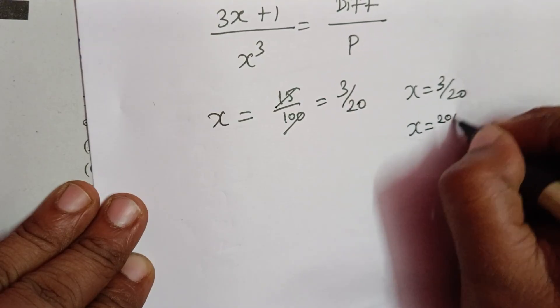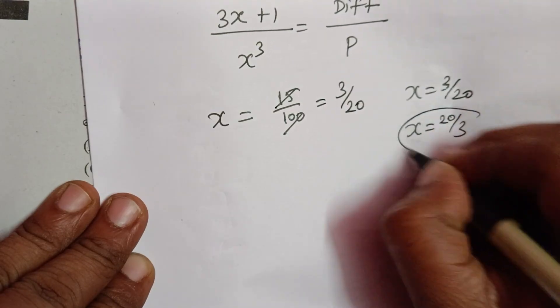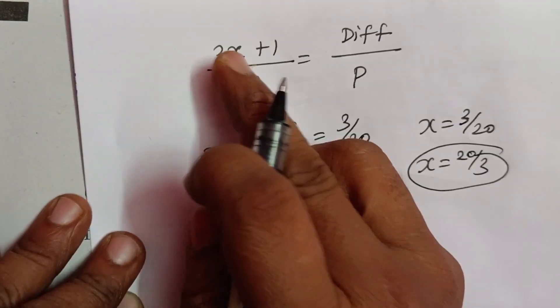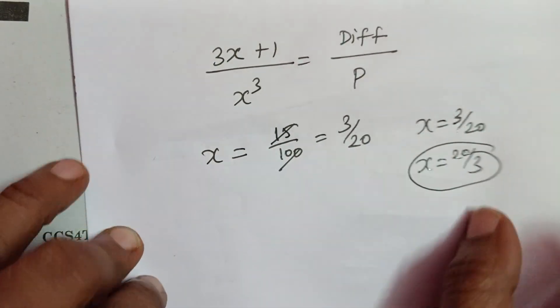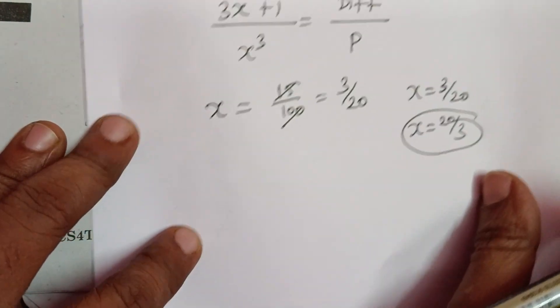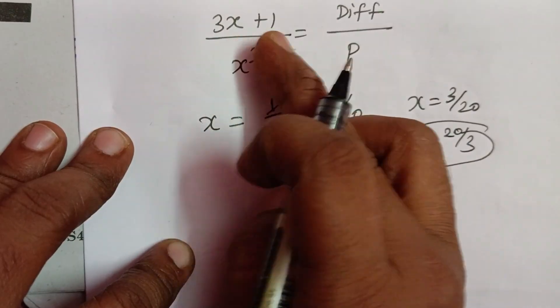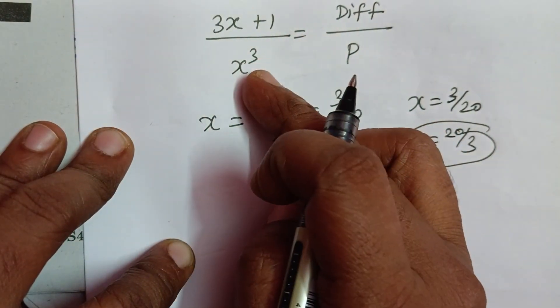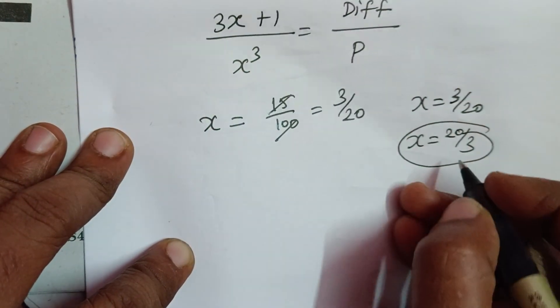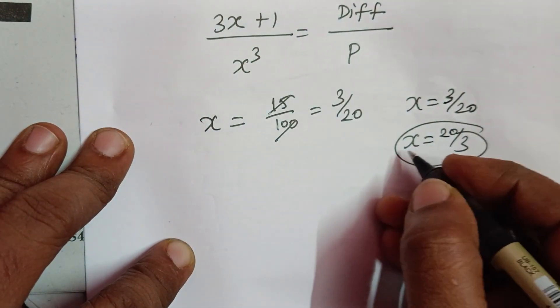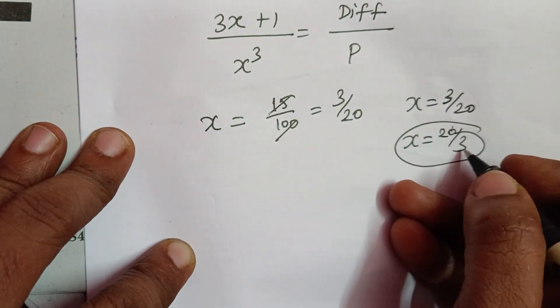We can use x is equal to 20 by 3. Now we apply the formula: 3x plus 1 divided by x cubed, with x taking the value of 20 by 3.